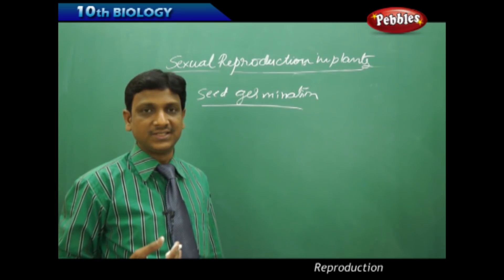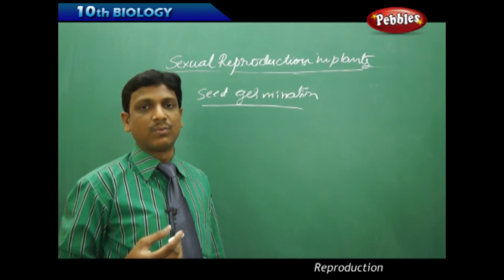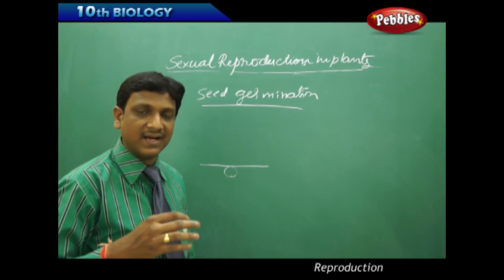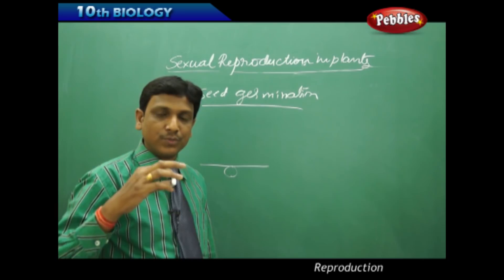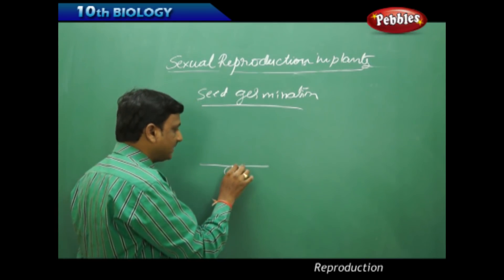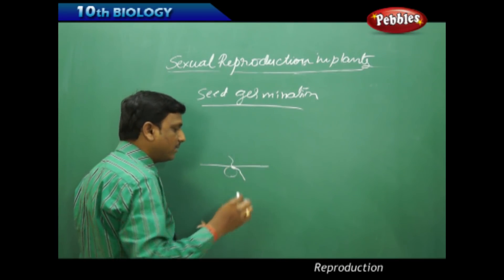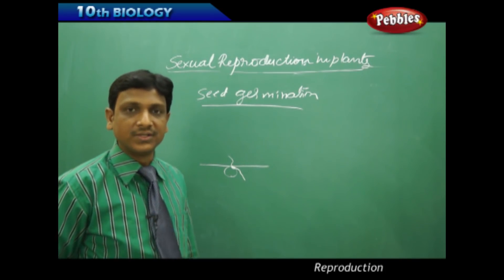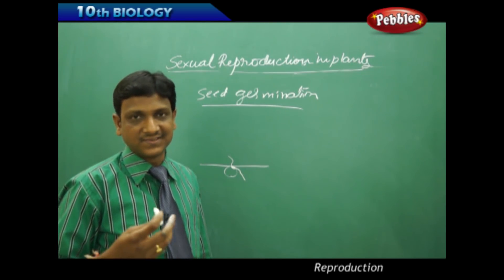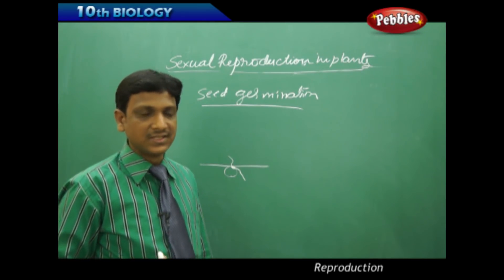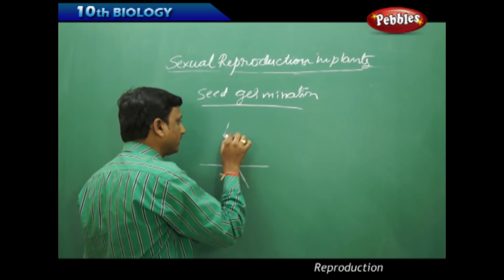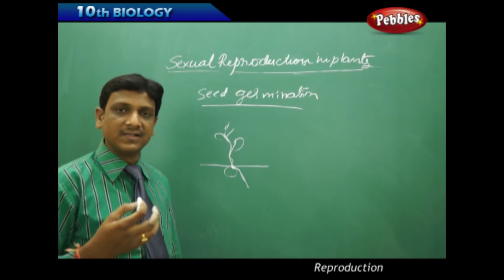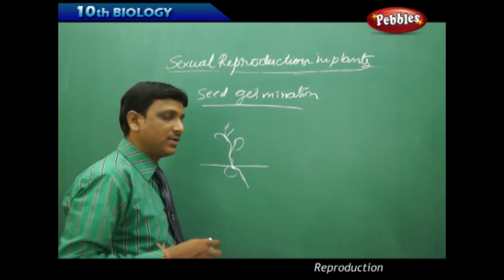Seeds germinate when necessary moisture and temperature are provided. When seeds are sown in soil, most seeds have a tough seed coat. First, to allow the embryo to produce a baby root and a baby shoot, the seed coat must be broken. When seeds are kept in water, the seed coat absorbs water and becomes soft; it then ruptures and the baby root and baby shoot come out. As the plant grows up, the cotyledons drop off and disintegrate, and it grows into a young plant.